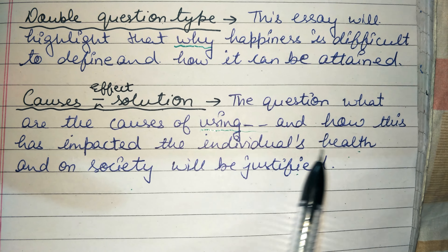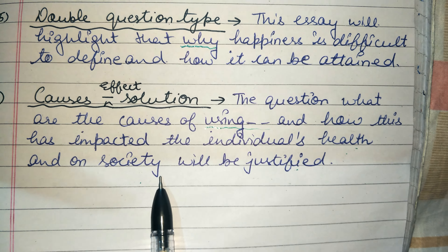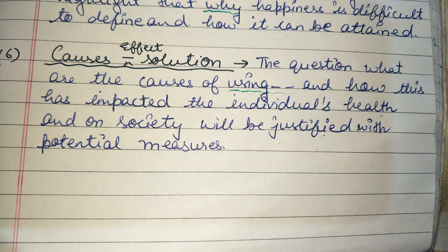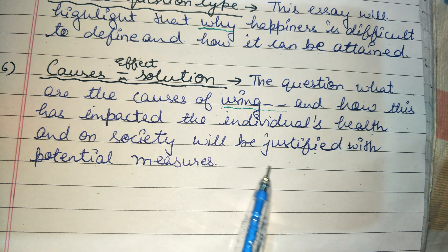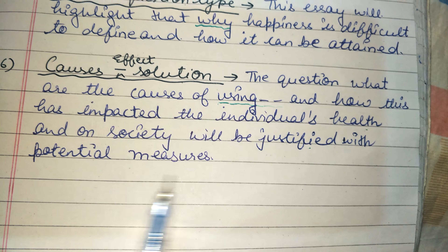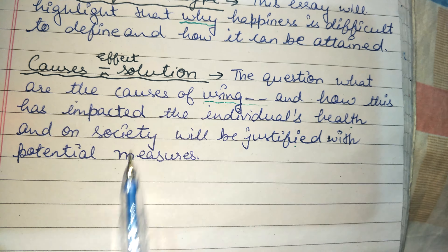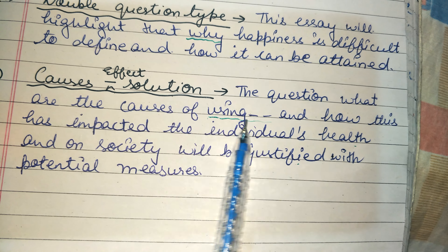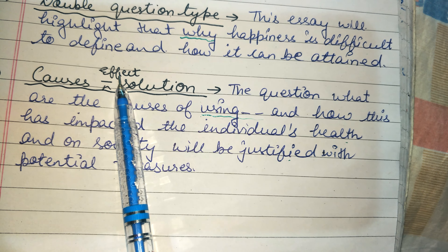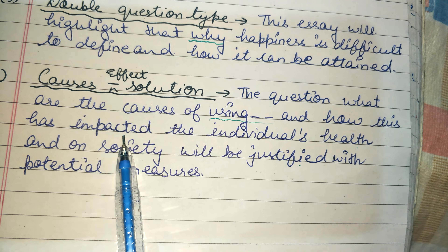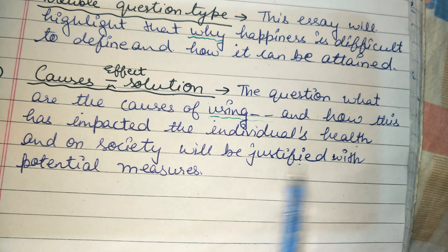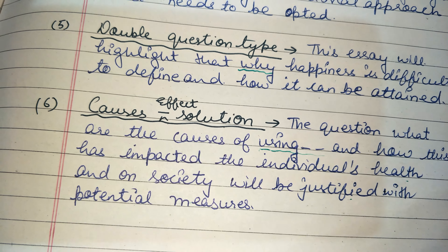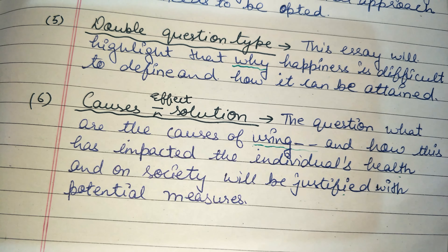If solutions are also asked, we write: '...will be justified with the potential measures.' This thesis line covers three things: causes of pollution, the effect — how this has impacted individuals' health — and the solution — with the potential measures. I hope you liked this video. Please like, subscribe, and share my channel. Thank you.